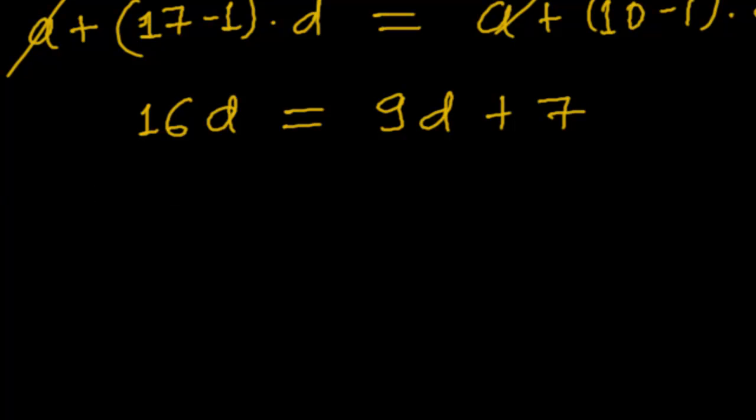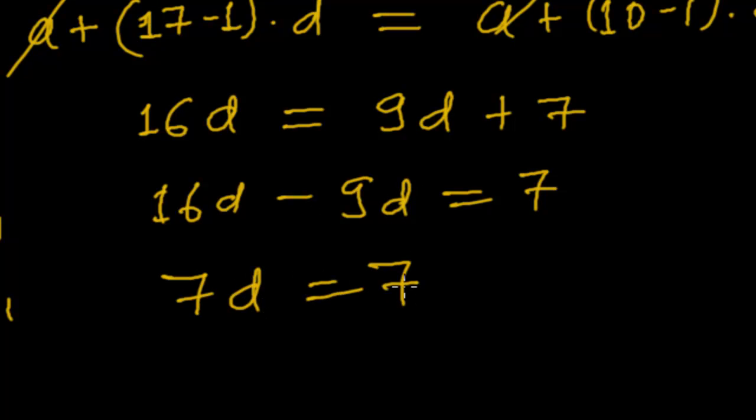Now 16d minus 9d - I'm taking the 9d to this side - so 16 minus 9 will be 7d equals 7. Therefore d equals 7 divided by 7, so d equals 1. So our common difference is 1, we got the value of common difference.